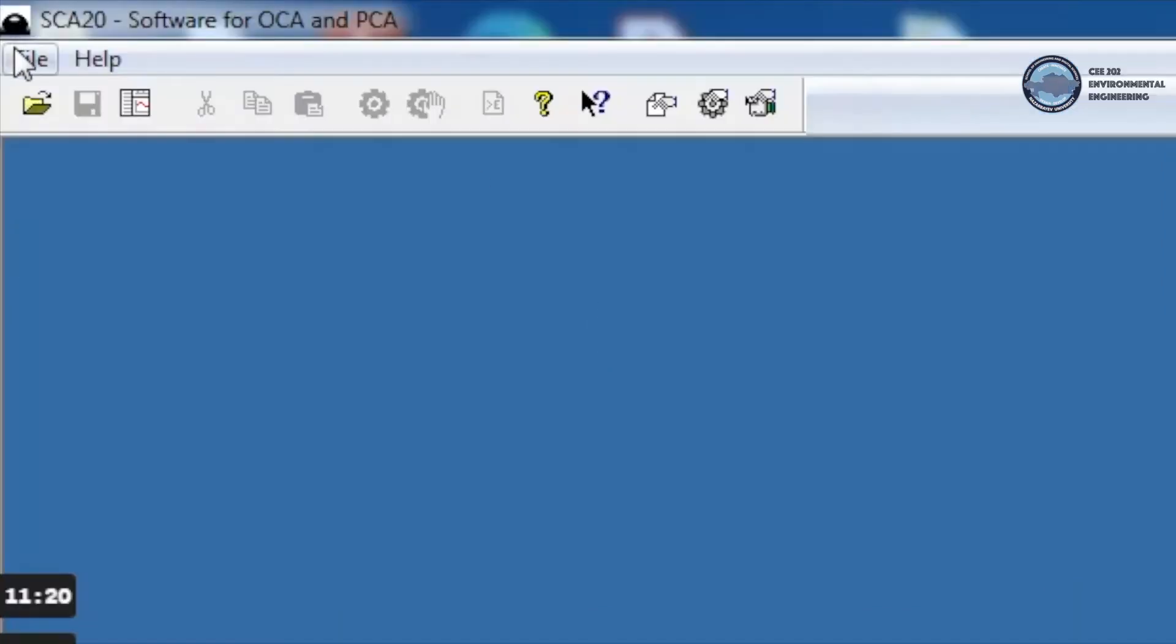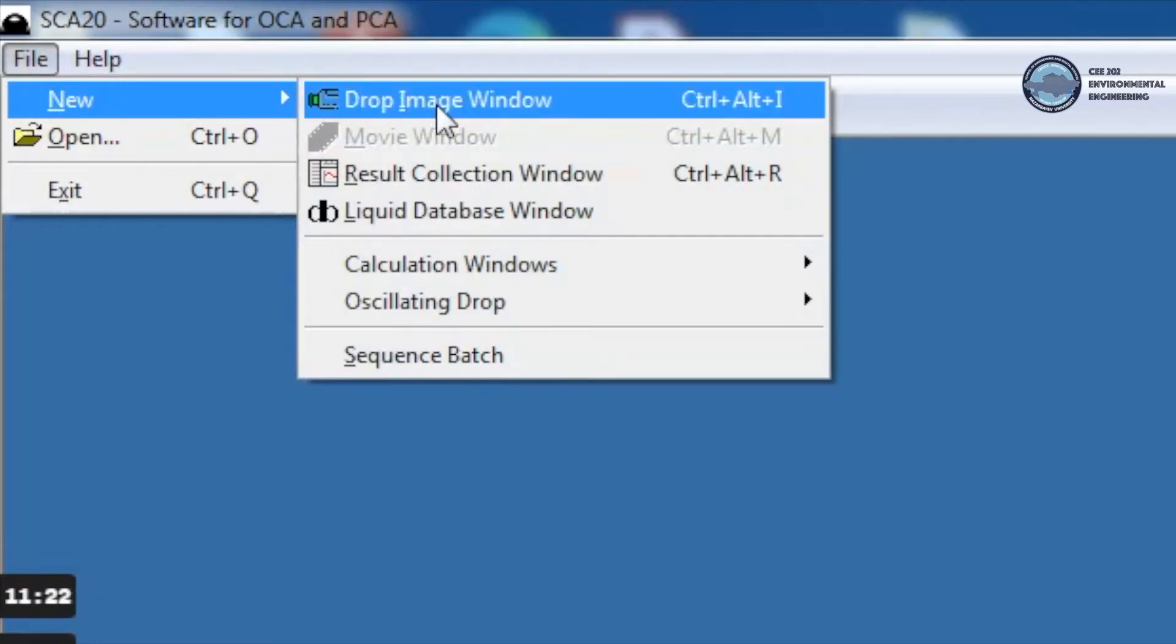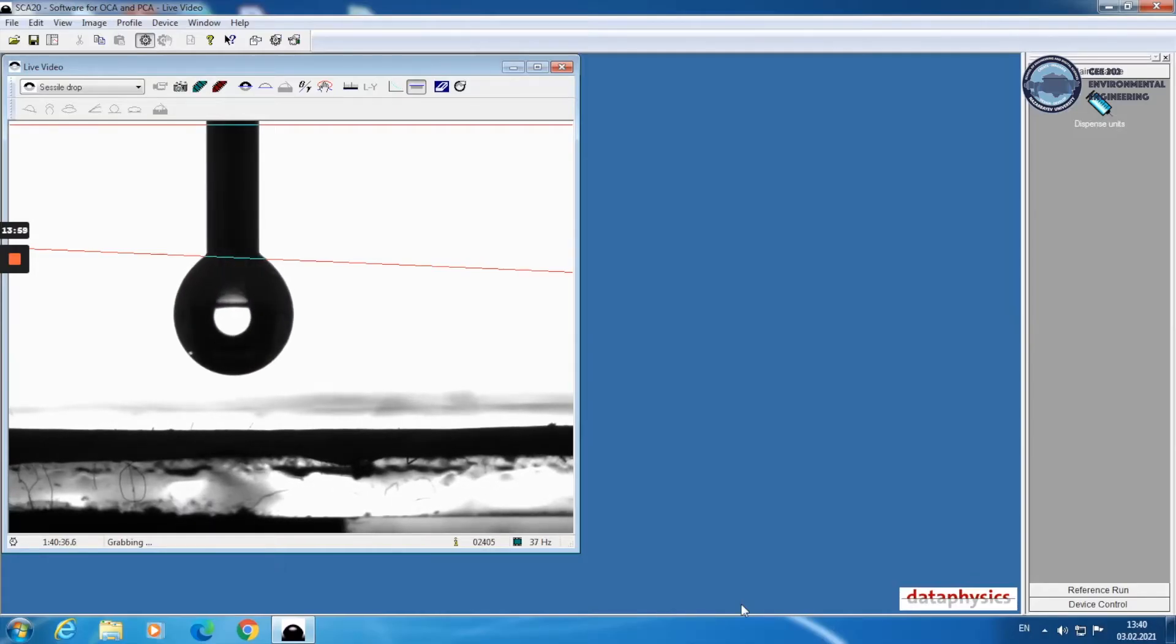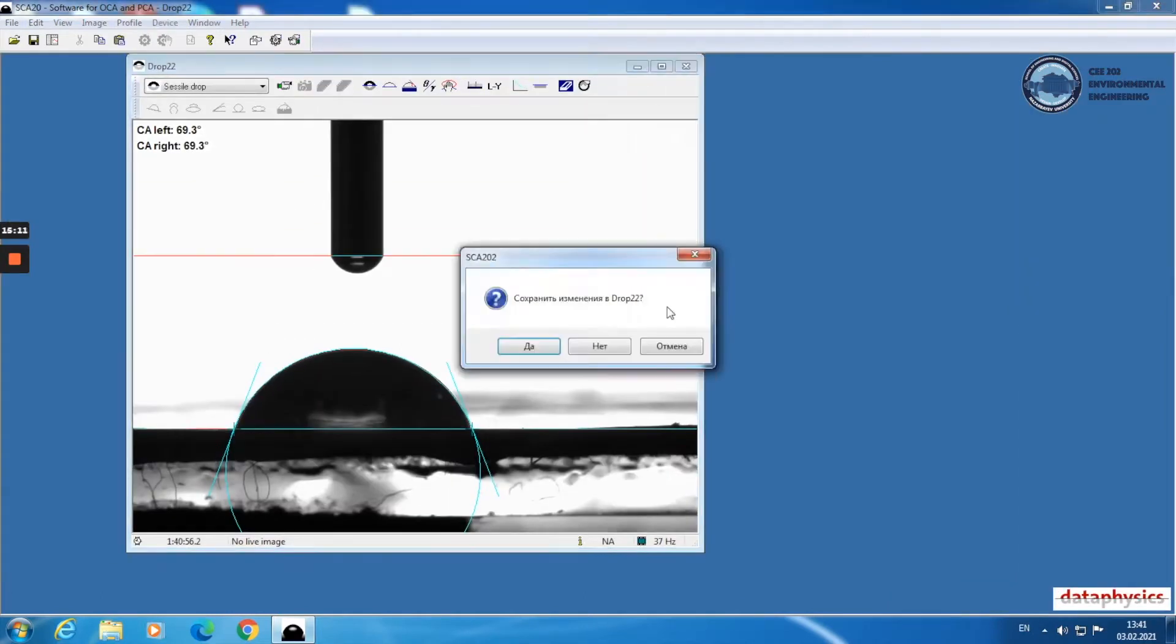To make a new measurement, on menu bar we click on file, select new and drop image window. We will measure contact angle of virgin membrane two more times.